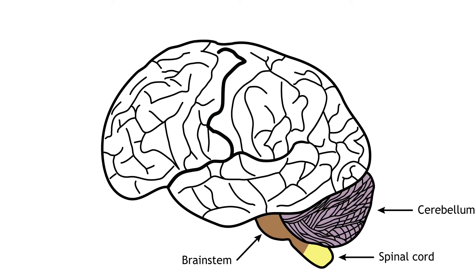The cerebellum lies inferior to the occipital lobes. The cerebellum is also divided into two hemispheres, like the cerebral cortex. The cerebellum is best known for its role in regulation and control of movement, but it is also involved in cognitive functions like emotions.